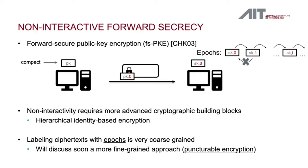This non-interactivity requires more advanced cryptographic building blocks, in particular techniques used to construct hierarchical identity-based encryption. But more importantly, this labeling of ciphertexts with epochs is quite coarse-grained. Once you upgrade your secret key to the next epoch, you are not allowed to decrypt any of the past ciphertexts, which might not be suitable for applications because you are essentially losing access to all data from the past. As we will discuss, there is a more fine-grained approach that abstracts fine-grained forward secrecy by the concept of puncture encryption.